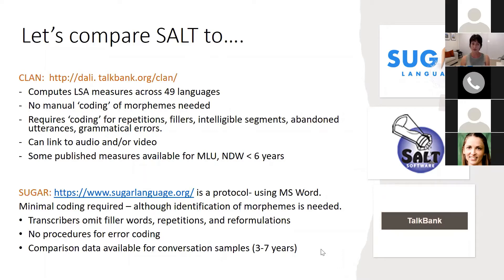CLAN doesn't ask you to manually code morphemes — that sounds good. However, it does require coding for repetitions, fillers, unintelligible segments, and abandoned utterances or grammatical errors, so that's not automatic. You can link it to audio and video, which is an amazing feature. They do have some published measures available for mean length of utterance and number of different words. Number of different words is a good indicator of a child's expressive vocabulary below the age of six.